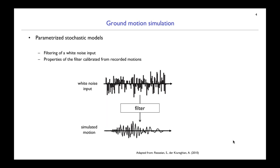Since all three of us will be using ground motion simulations, here's a brief overview of different approaches. On one end are stochastic models: a white noise signal is passed through a filter whose properties are calibrated based on recorded motions for the region of interest. This approach is empirical — there's no underlying physics — so it's limited in extrapolation beyond the data used to train the filter.